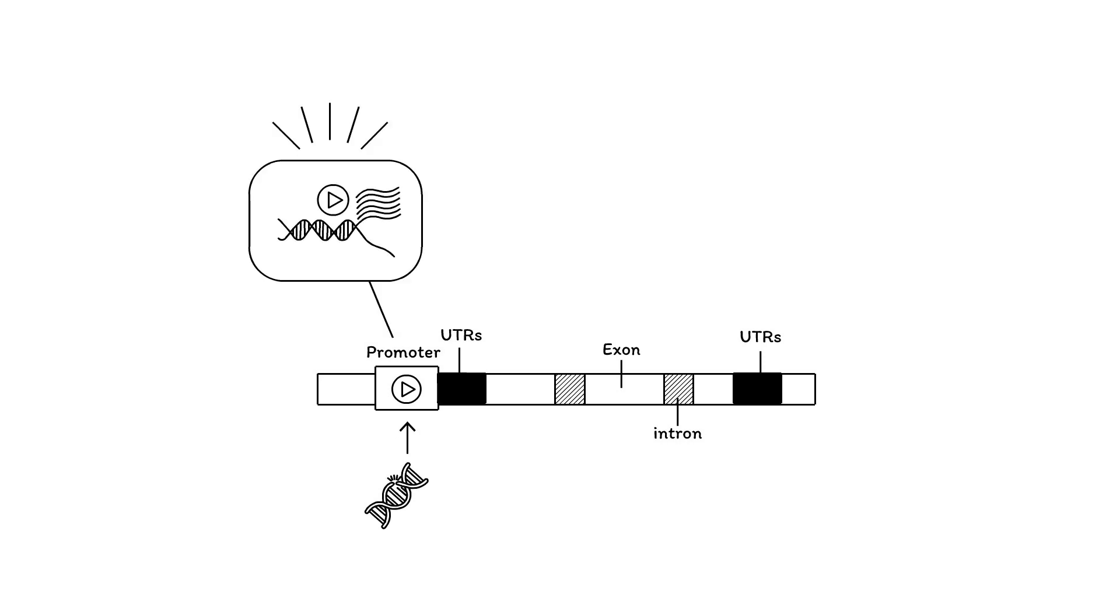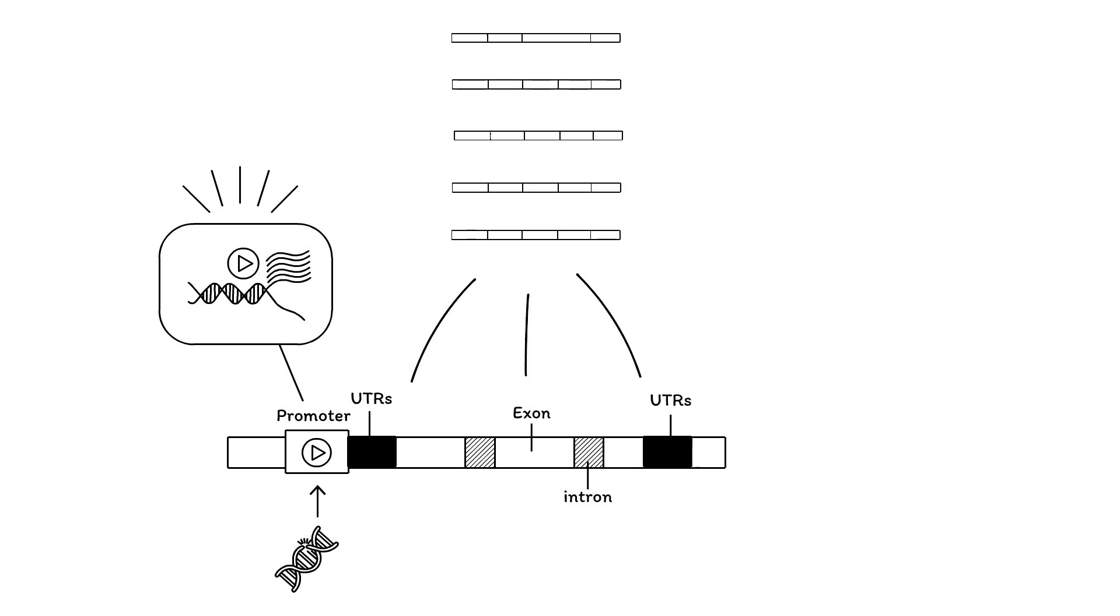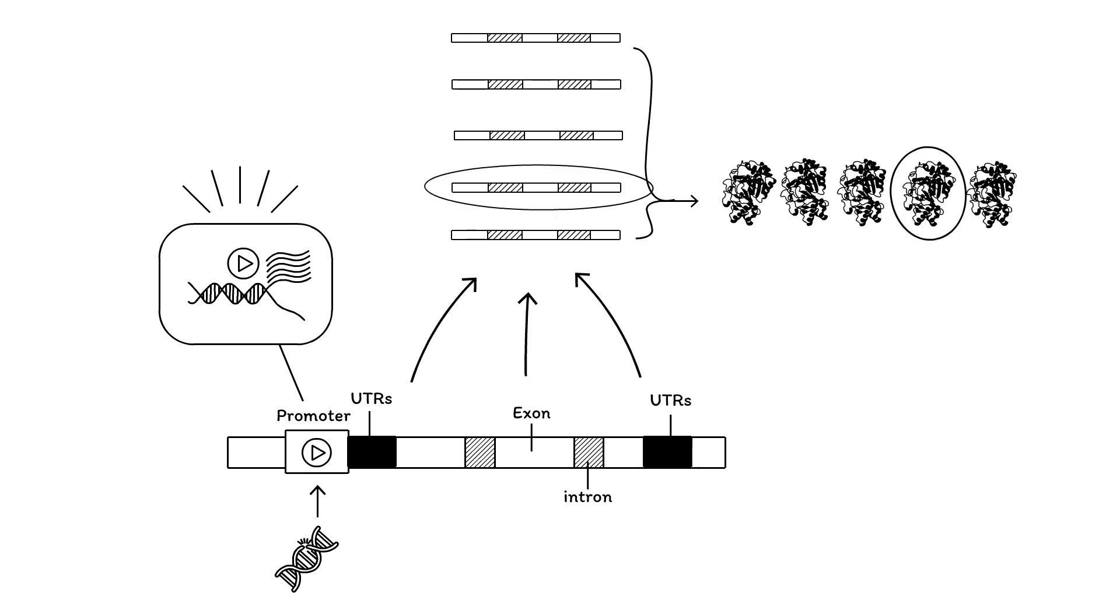If the variant is located in the regulatory region of a gene, for example the promoter, gene transcription could be affected. As a consequence, the amount of mRNA and protein that is produced will be changed.